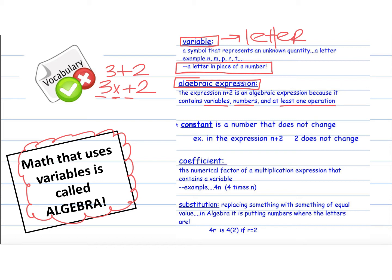Constant is a number that does not change. So if we look at n plus 2, you could just write down n plus 2, and then you could write 2 is the constant because 2 does not change. So you could even write a little arrow that says constant.